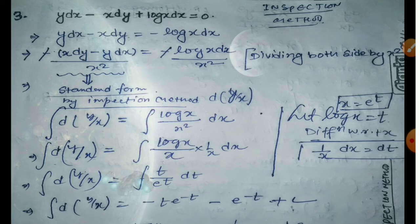Question 3: y dx minus x dy plus log x dx equals zero. The standard form d(y/x) is known to us, so we work with that. d(y/x) appears when we have x dy minus y dx — the proof of this was done in the previous video. What we need to remember is how the proof was done and what the solution is. If the standard form and its solution are remembered, it becomes easy.